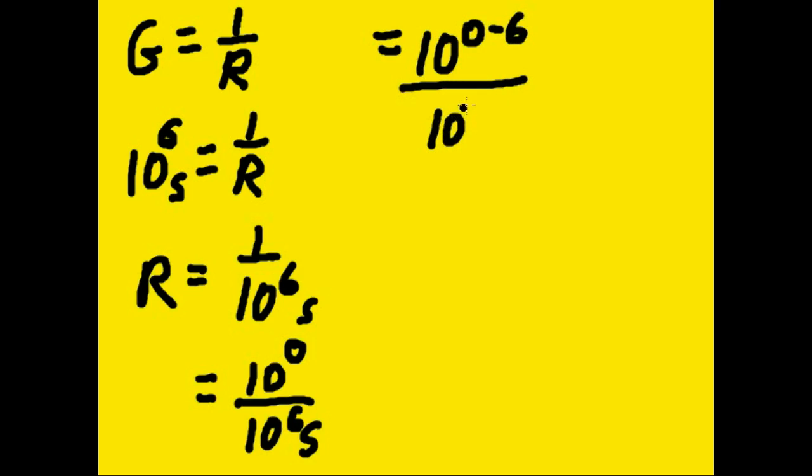Which is the same as saying ten to the negative six over ten to the zero. That's a one, and that's the same as saying ten to the negative six, which is the same as saying a micro. And this is all siemens.